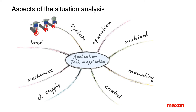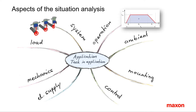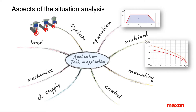These eight aspects define a given application quite well from a technical point of view. Note that they are not independent from each other, hence there is no need to go through them in the order presented here. First: operation — duty cycle, motion profiles, idle duration. Second: ambient conditions — think of temperature, humidity, vacuum, vibration, noise, electromagnetic susceptibility.